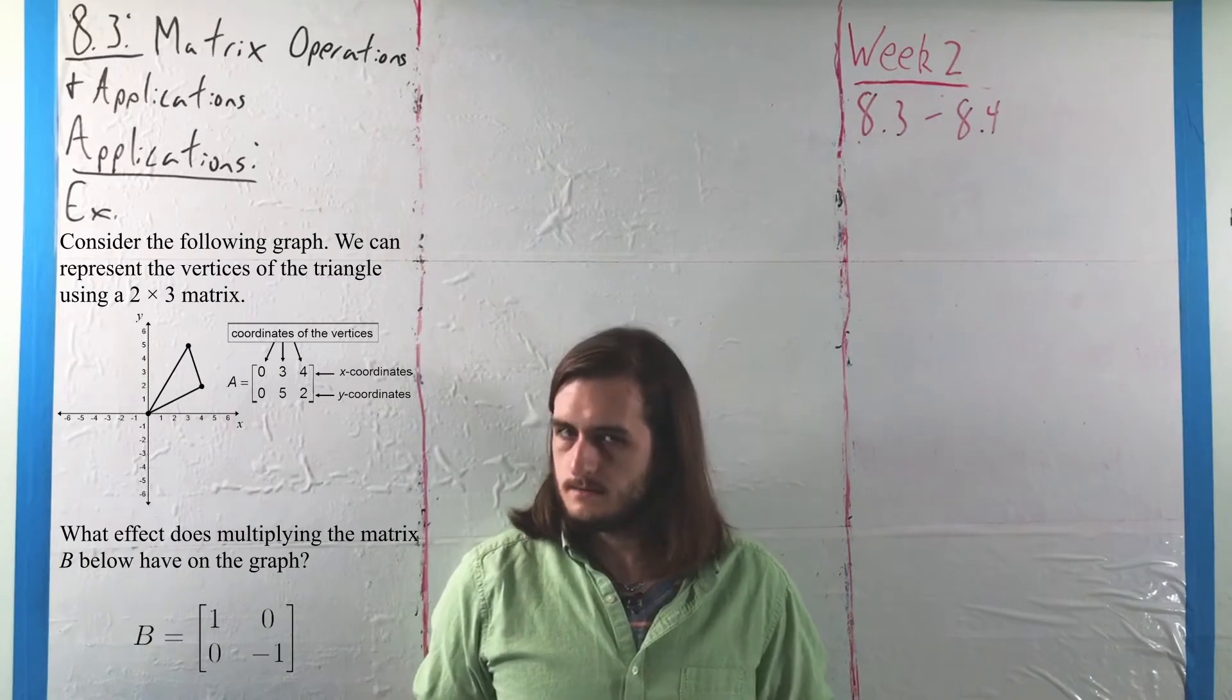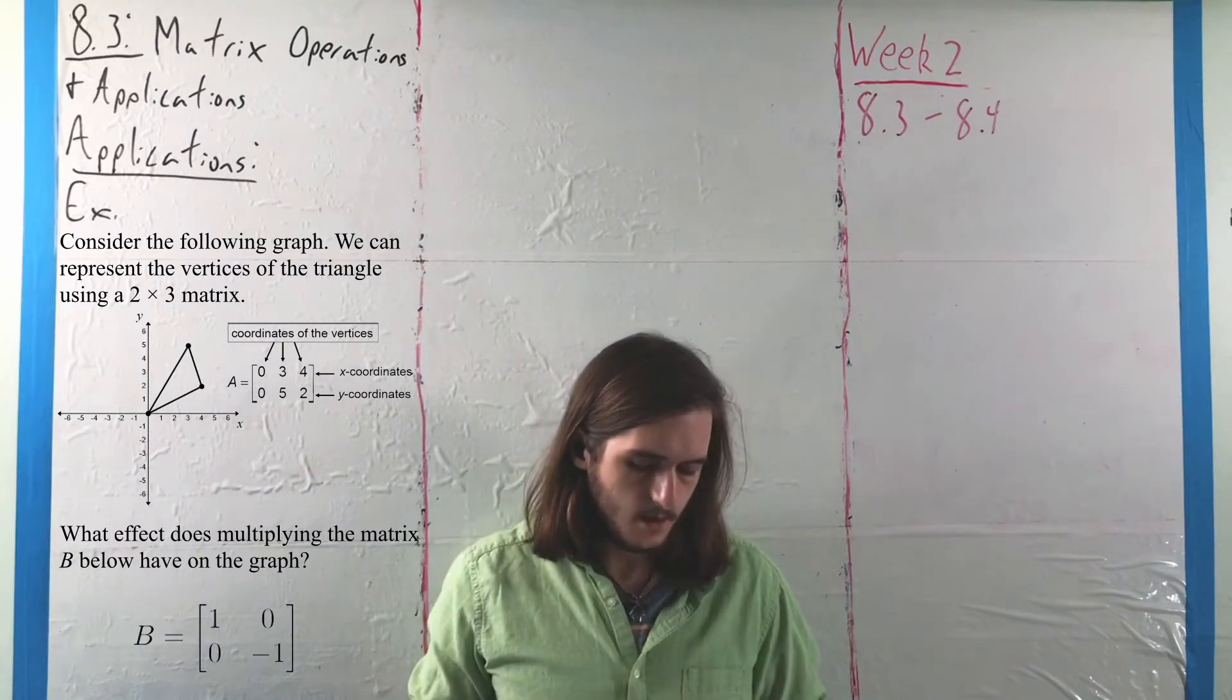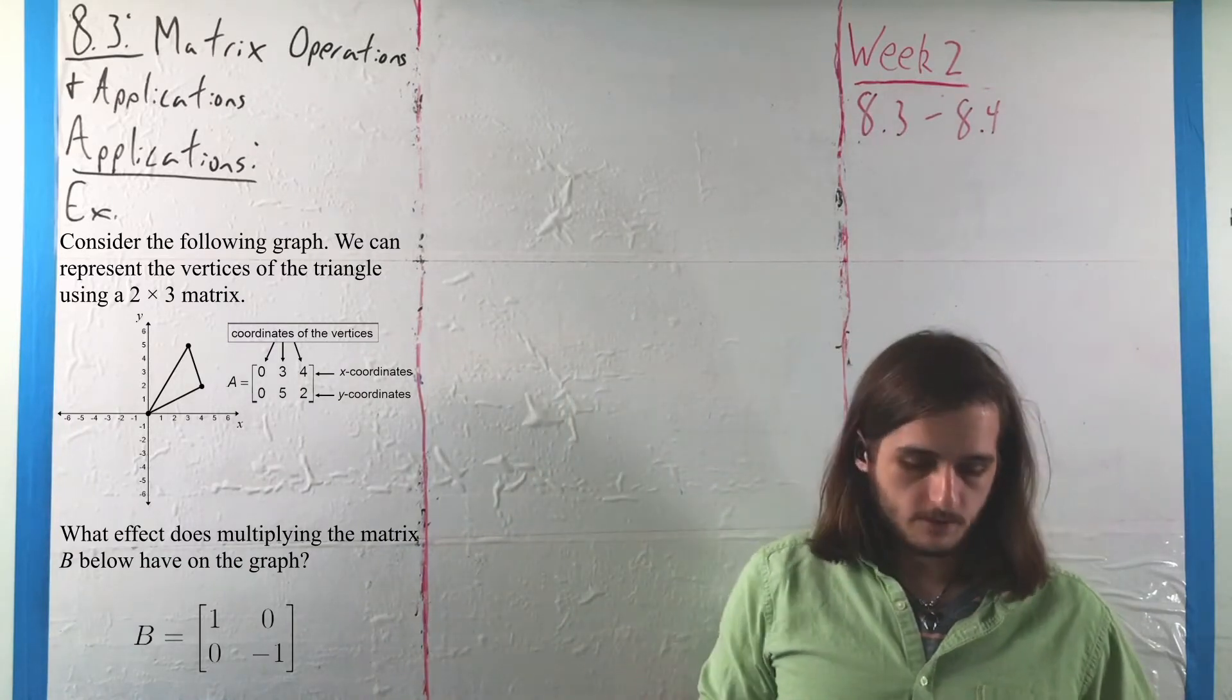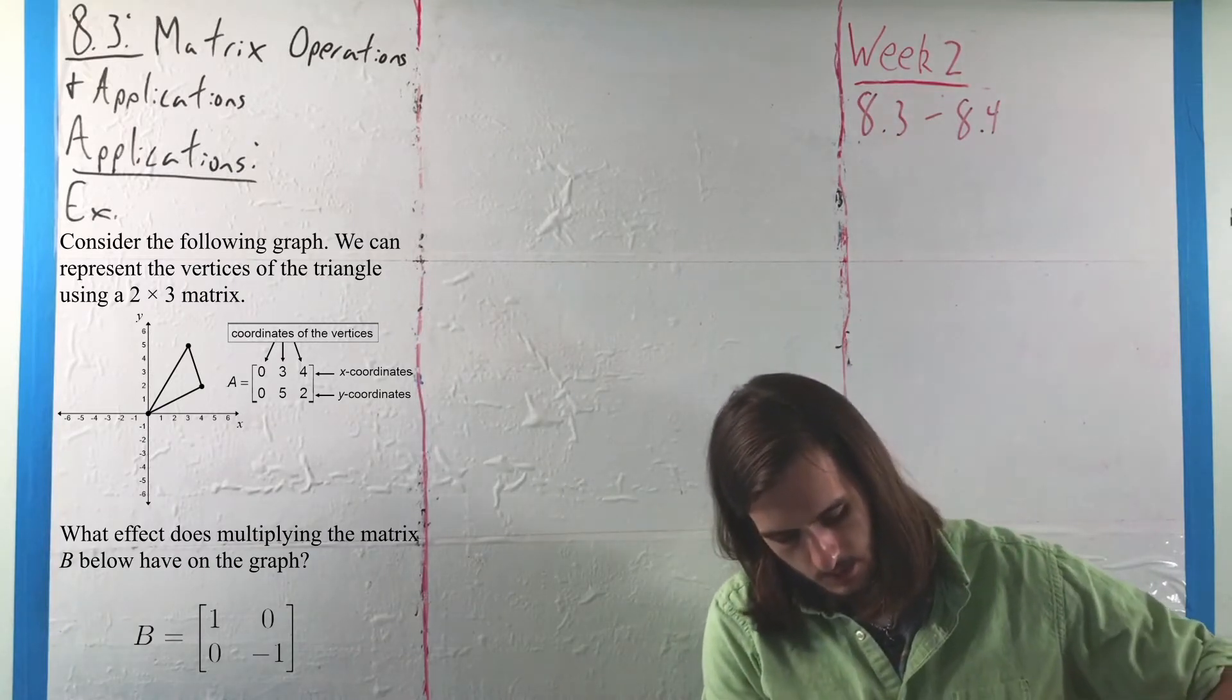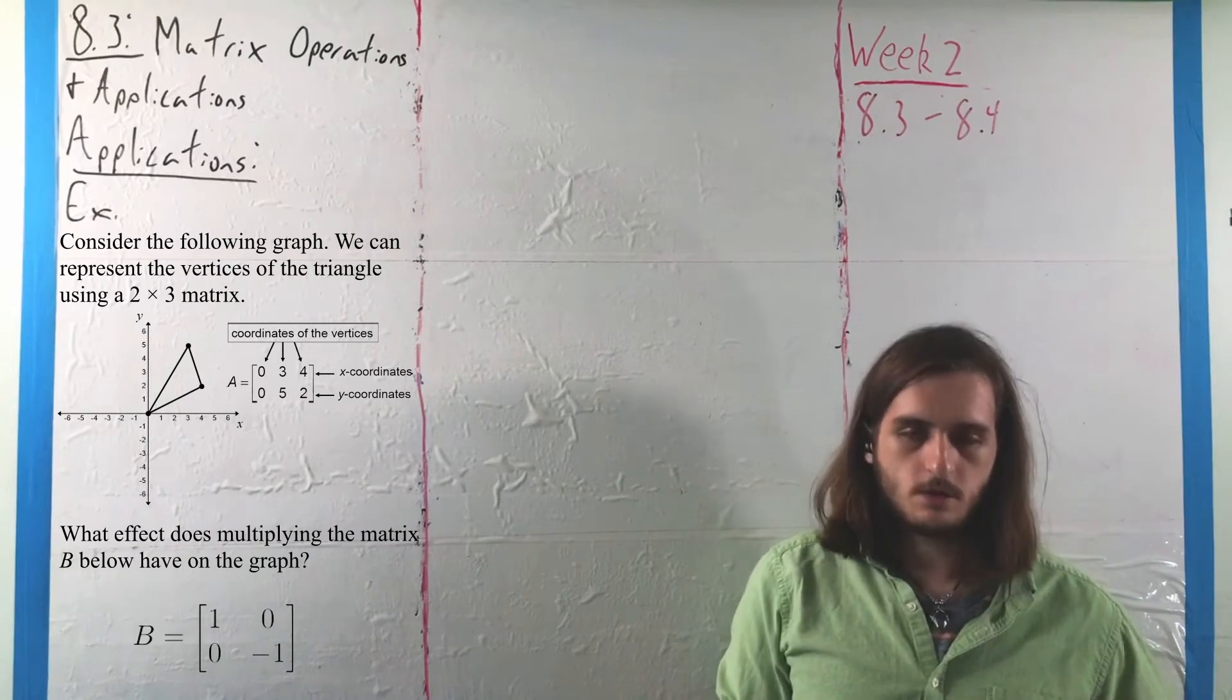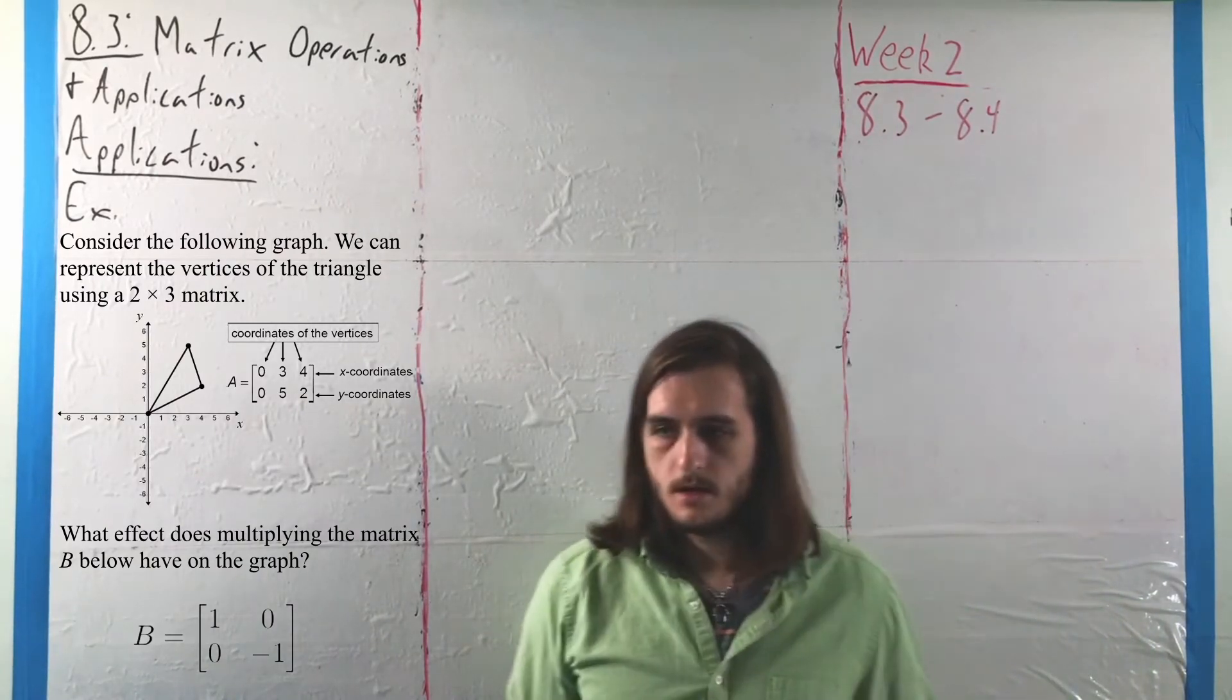So what we're going to do is see what effect multiplying that matrix of coordinates by the matrix B, which is [1, 0; 0, -1], has graphically on A.